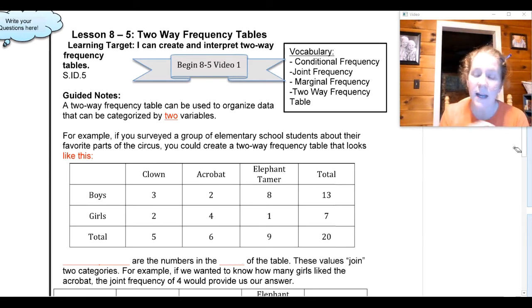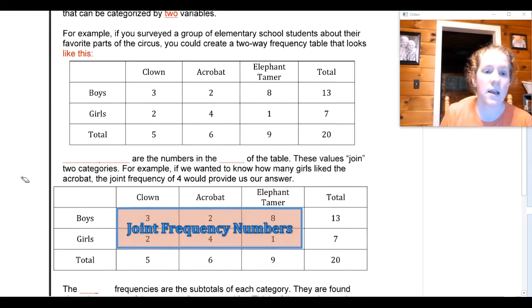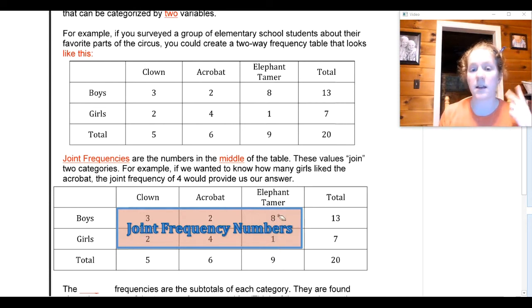We break the numbers in these tables up with different names. Joint frequencies are the numbers in the middle of the table, these ones that are joining two pieces of information. This 3 represents the group of people that are both boys and like clowns the best. This 1 right here is joining two pieces of information. It's a girl because it's in this row and it likes elephant tamers because it's in this column.